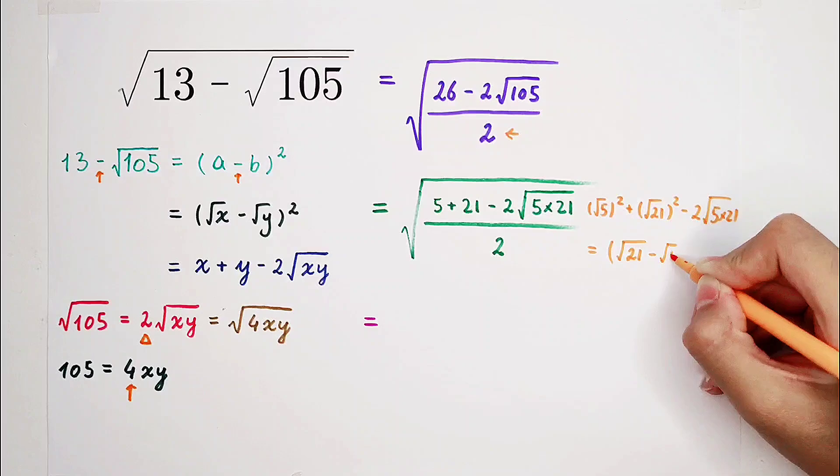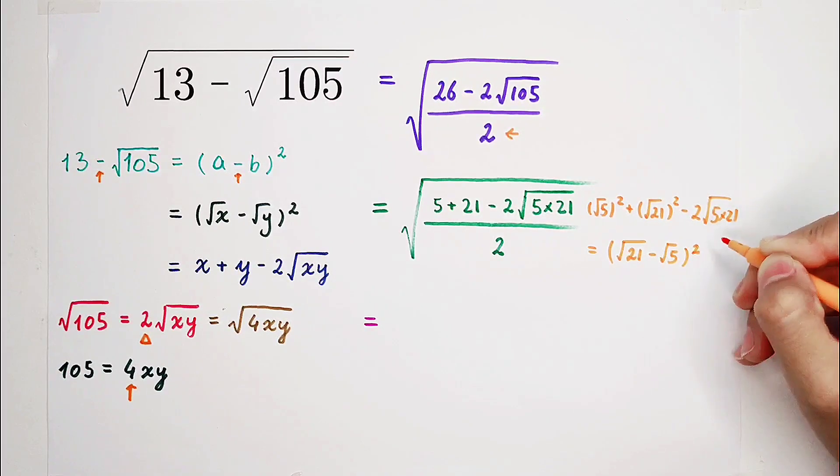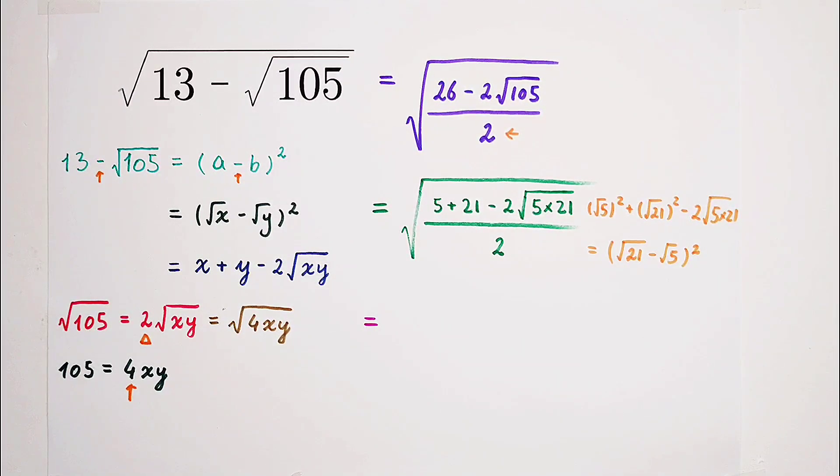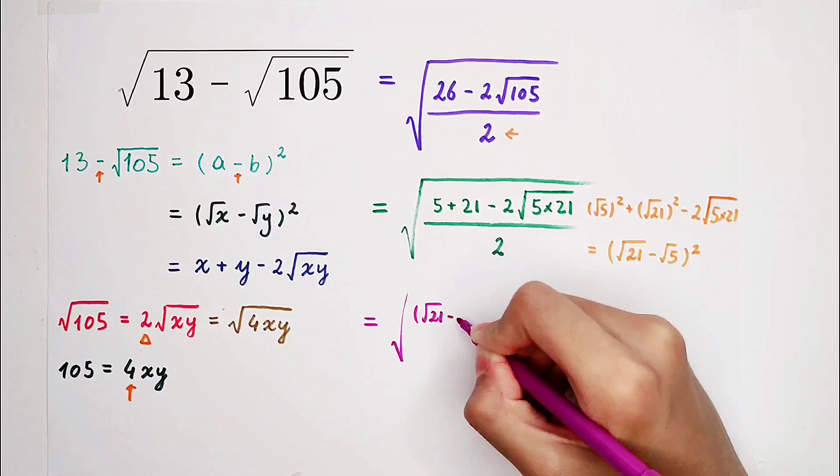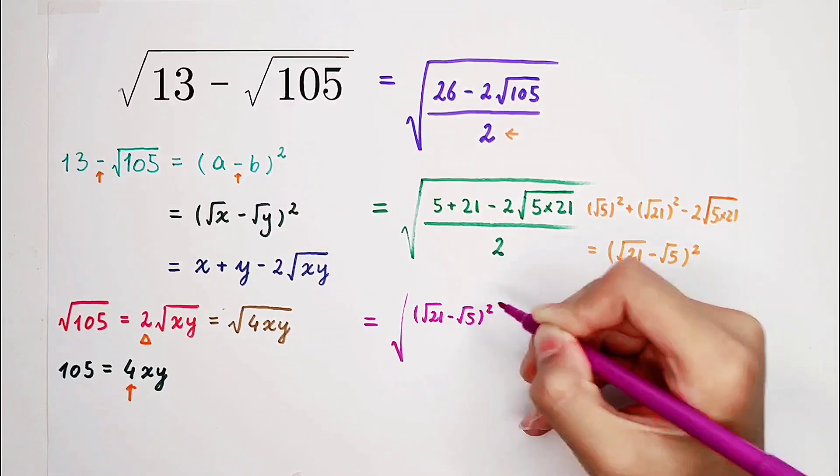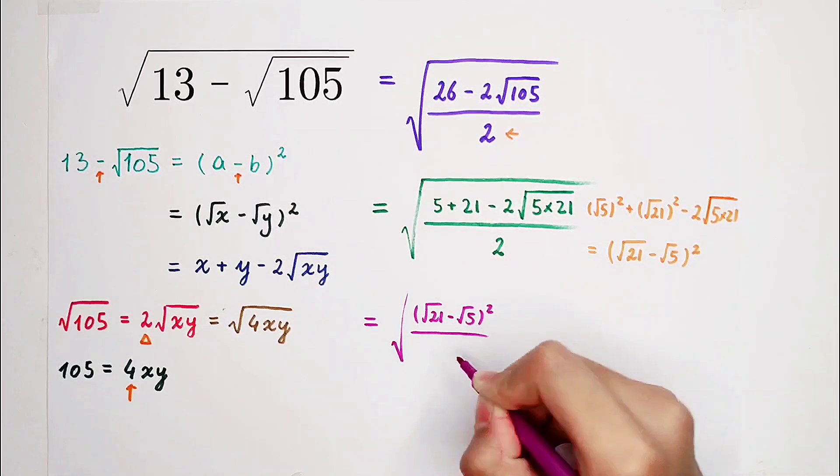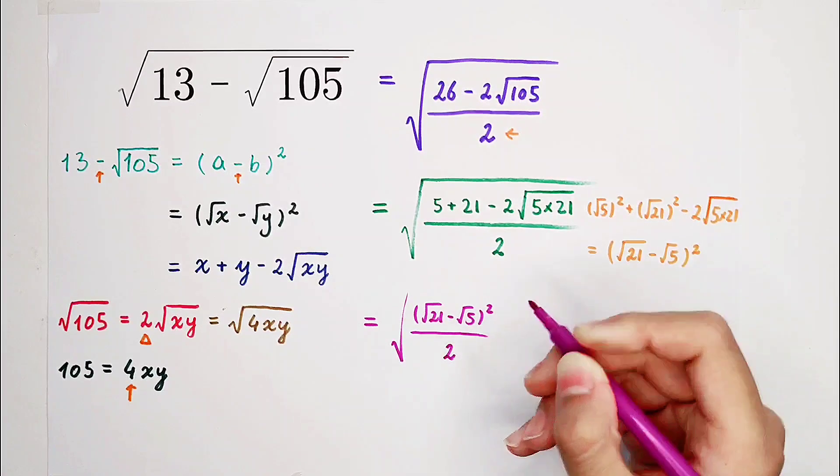Square root of 21 minus square root of 5, or squared. So that's the numerator. So it is square root of 21 minus square root of 5, or squared, and then divided by 2.